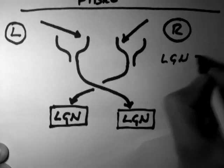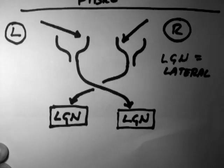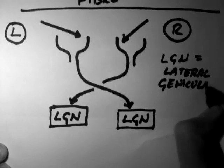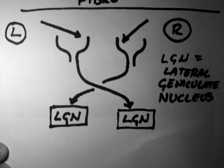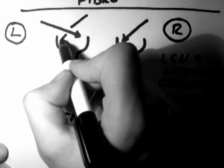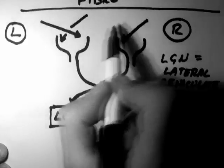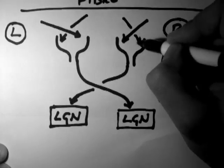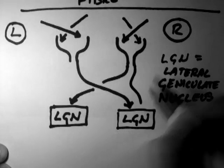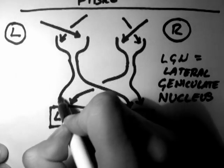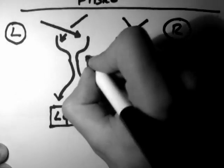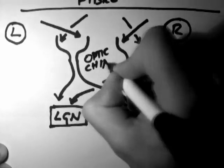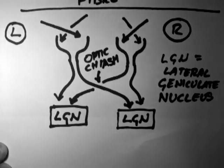Now these go to the LGN — the LGN stands for the lateral geniculate nucleus. Information that comes in from the periphery crosses over to the LGN on the opposite side. However, information that comes from the inside of our visual field, not from the periphery, hits these outside or temporal retinas. The information from those comes down through the optic nerve but doesn't cross over, and goes to the LGN on the same side. This is the optic chiasm, where these cross over.